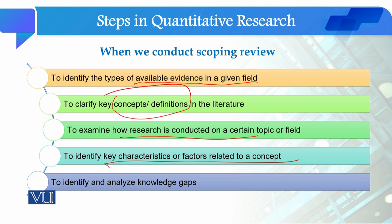We talked about how a systematic literature review can be published in the form of a conference paper, research article, or a book chapter. The same is the case with the scoping review as well — whether you are doing it in your thesis or your research project, you can also publish it in the shape of a research article, conference paper, or a book chapter.